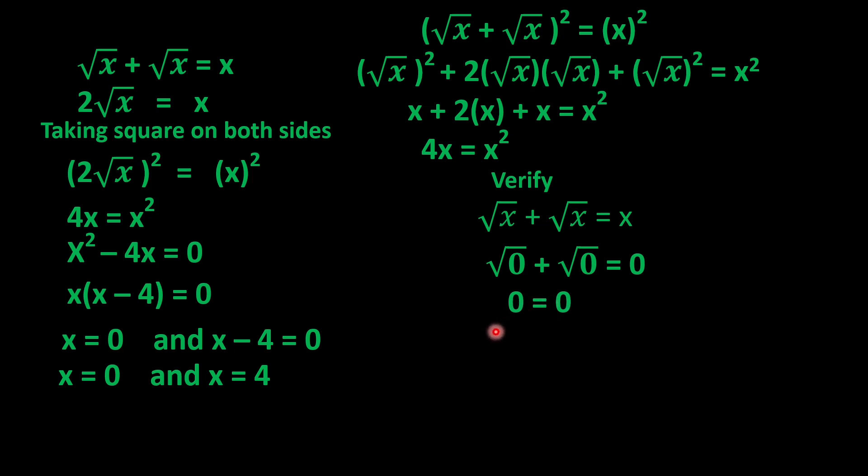Now let's check for x = 4. When we put x = 4, it becomes √4 + √4 = 4. Since √4 equals 2, we get 2 + 2 = 4, and 4 = 4. So it is again verified.